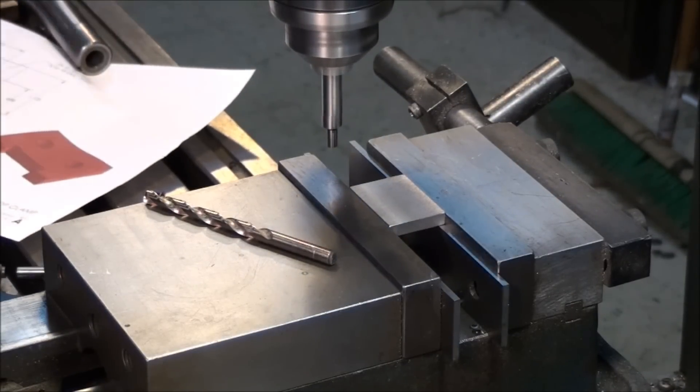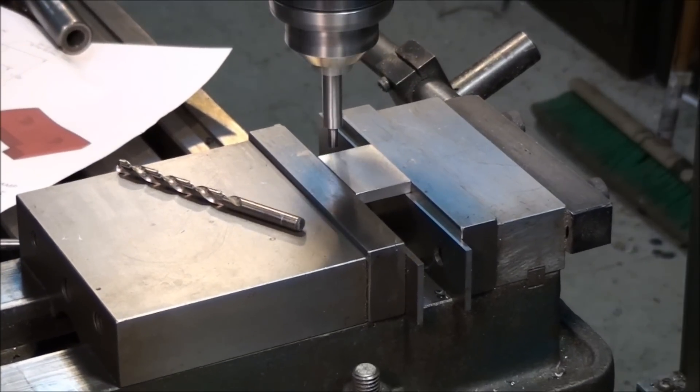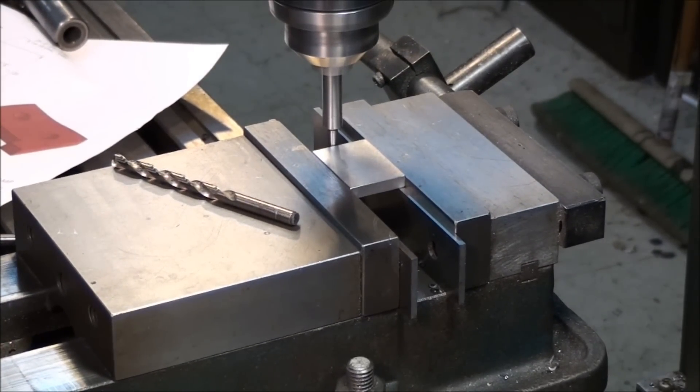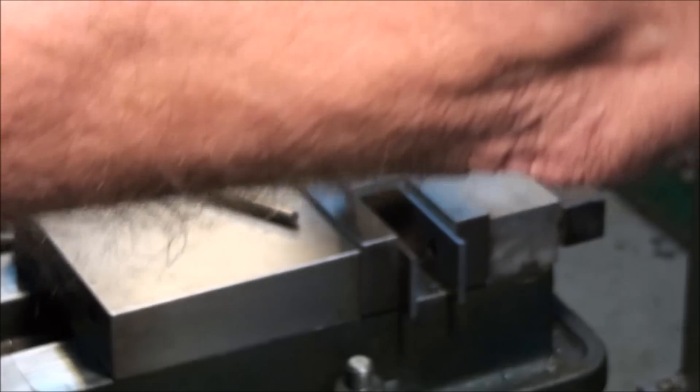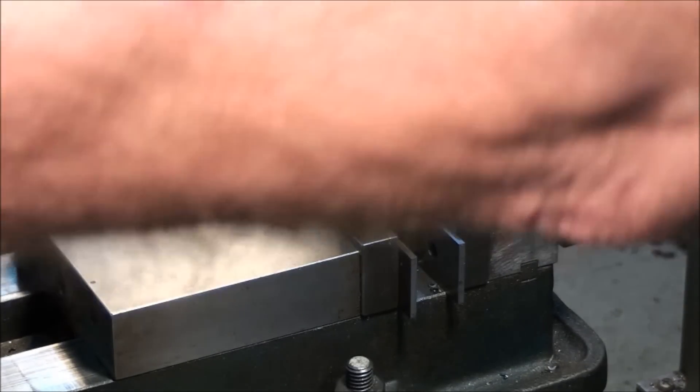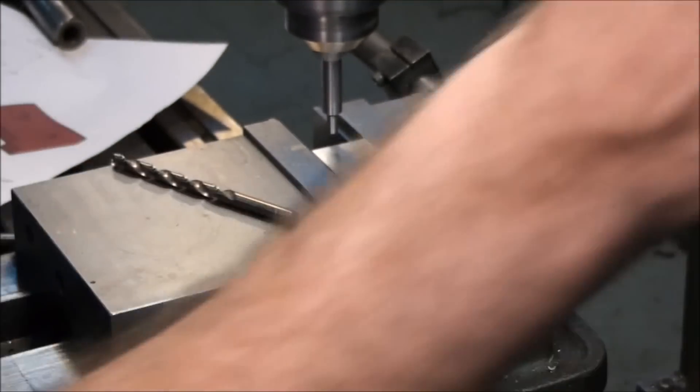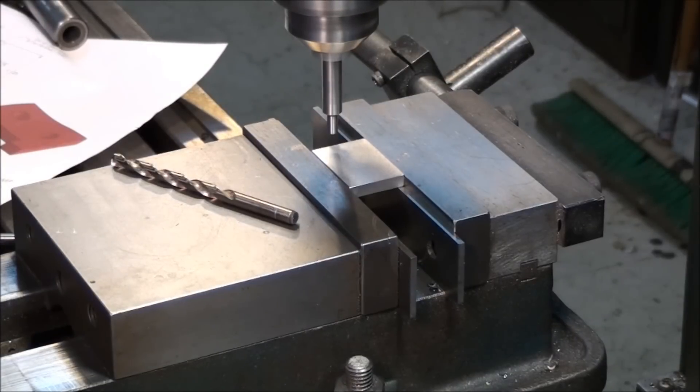So let's pick up the left hand side of the part first. I'm not going to bother showing you the digital readout because we've been here before. Let's just touch the edge of the part, move over half the diameter of the edge finder.